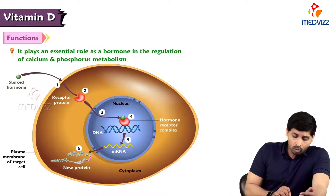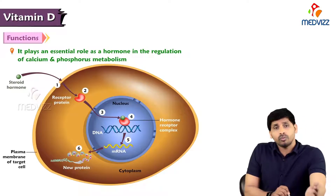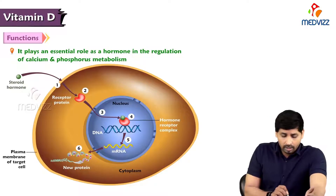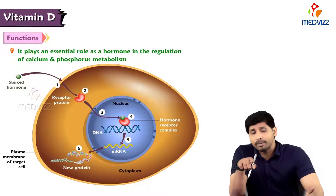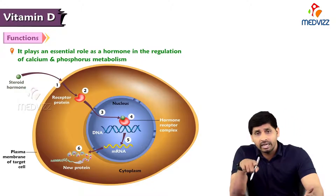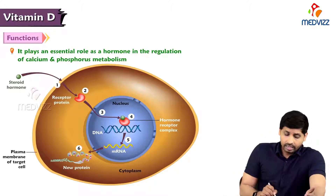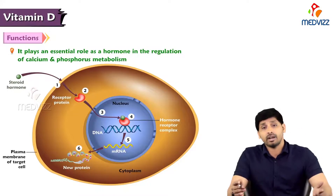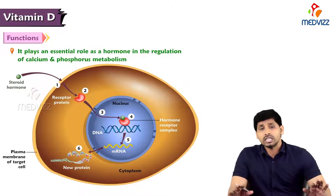Vitamin D is a steroid in nature. When vitamin D binds to the cell, it goes into the cell by a receptor protein complex, reaches the nucleus, and stimulates a particular part of the DNA by binding through a hormone-receptor complex, synthesizing mRNA. This mRNA is then useful in the synthesis of proteins.